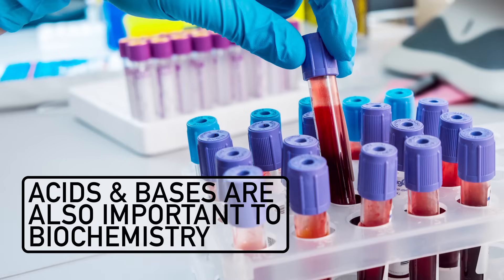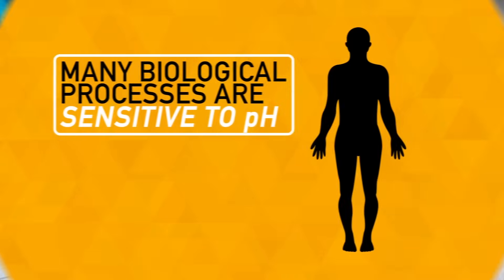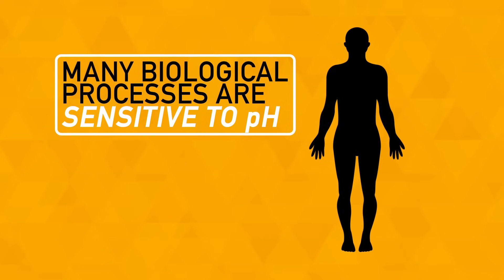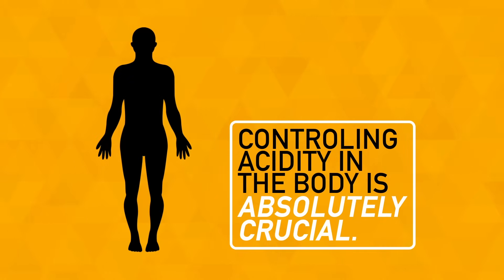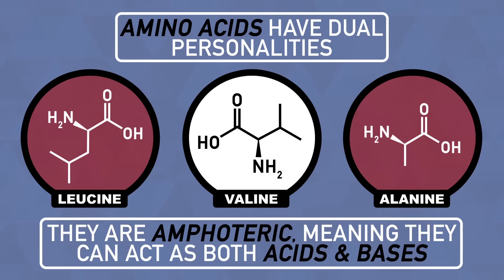Acids and bases are also very important in biochemistry. Many biological processes are sensitive to the pH of the surroundings, so controlling acidity in the body is crucial. Some biologically important molecules like amino acids have dual personalities.